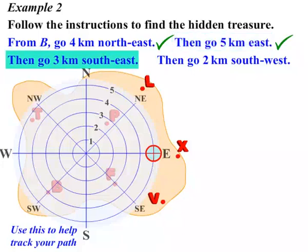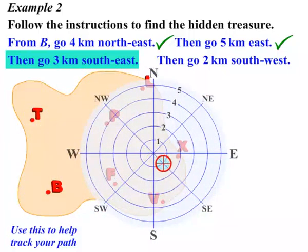The next step, we need to go 3 km South-East. So let's move the compass, and then 3 km South-East. There we go. Let's give that a tick.